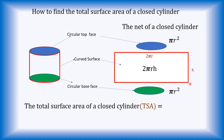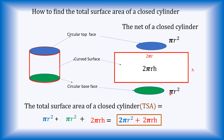So if we add the circular top area, which is pi r squared, plus the lower circular area, another pi r squared, added to the curved surface area, which is 2 pi r h, we get the total surface area of 2 pi r squared plus 2 pi r h. That gives us the formula for the total surface area of a closed cylinder.